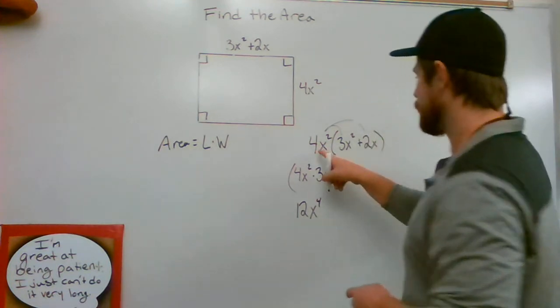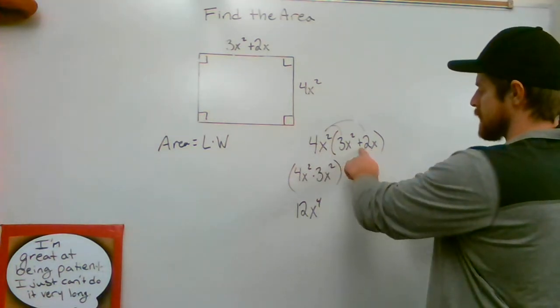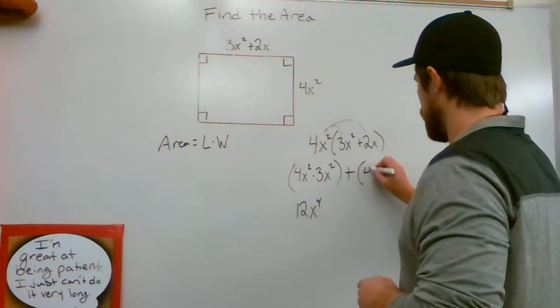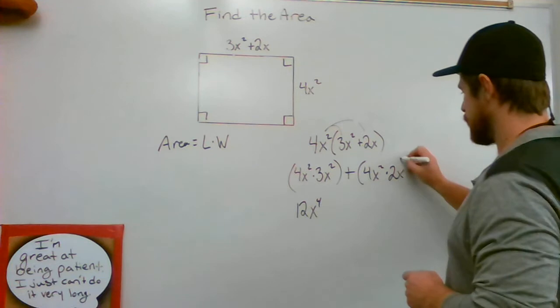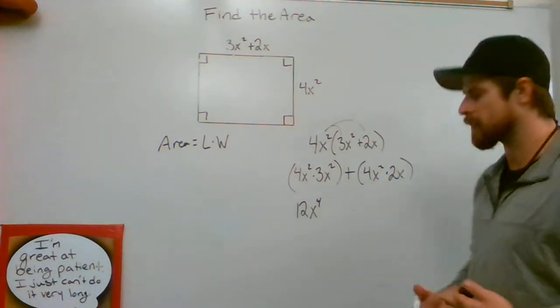Now, we are adding 4x squared plus the 2x. We've got to add this part because that's the operation in between. So now we're going to say plus 4x squared times 2x. And we're going to work this part out. Again, we're going to need to use the product rule.